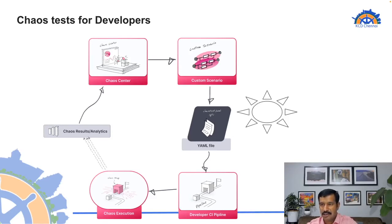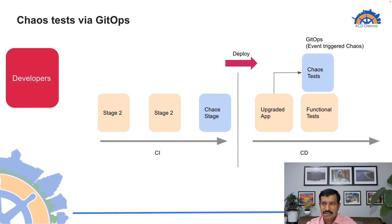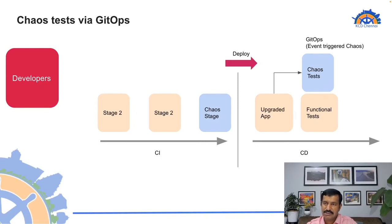Once chaos analytics are available in Chaos Center, you can compare them over time to see how your application is improving and continuously verify no new bugs are being introduced before merging code into your repository. Another approach is through GitOps — in your pre-production environment, apps are upgraded and a certain test is triggered automatically. Before code goes to production, the pre-production environment verifies new functionality against certain failures, which can be triggered automatically without developers needing to act manually.